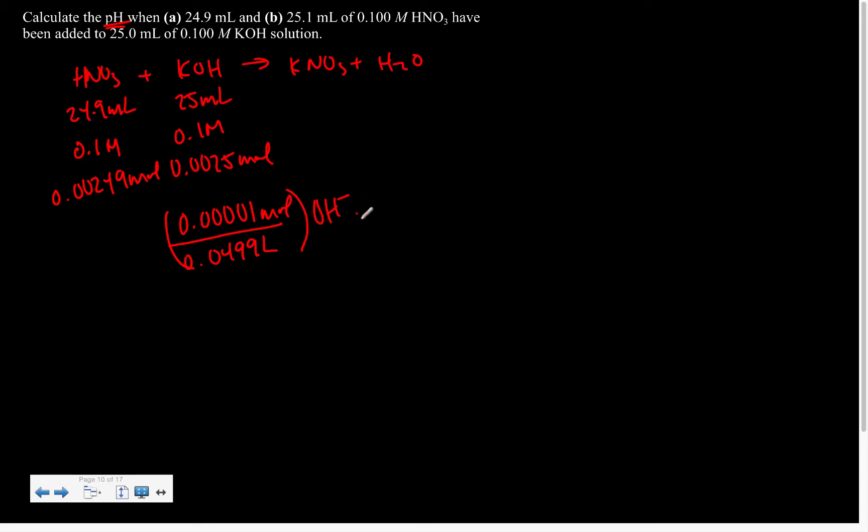Now if I want to solve for the pH, it's simply a matter of taking the pOH and then subtracting from 14, which gives us 10.30.